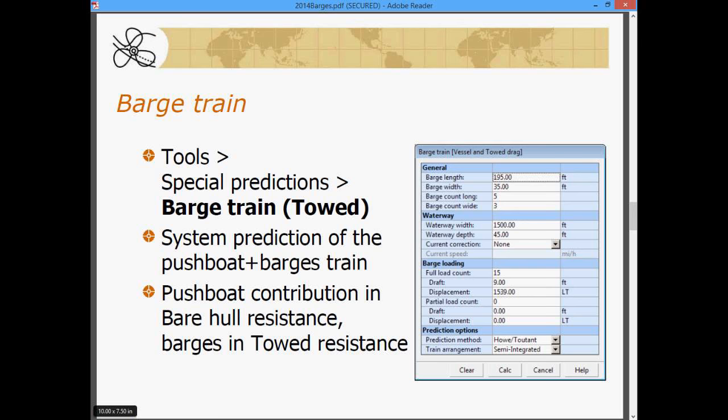So, this is treated as a system calculation, a system prediction of the pushboat plus the barges in the train. Now, when the prediction is conducted in NAVCAD, the pushboat's contribution is paired off of it and placed in the bare hull resistance column, and the remaining barge resistance is included in the towed resistance column.